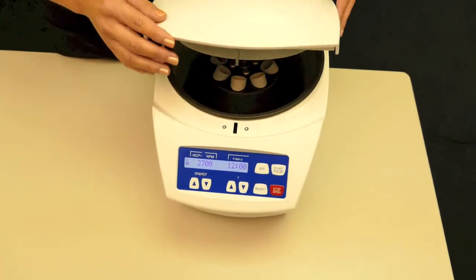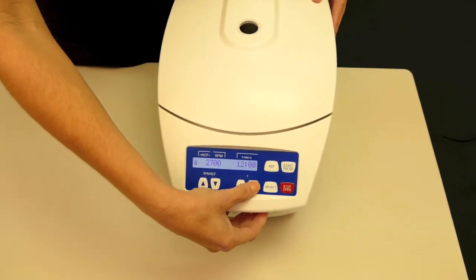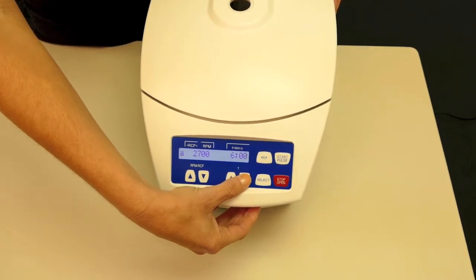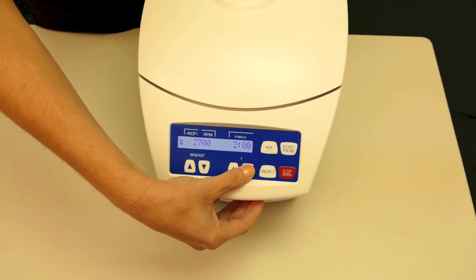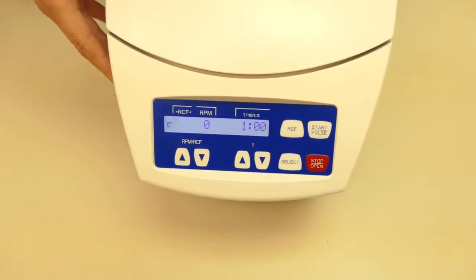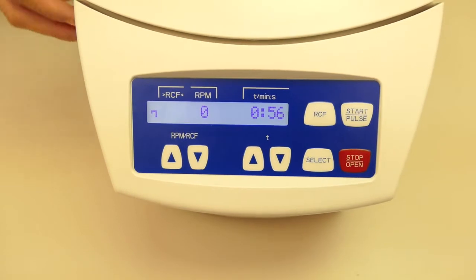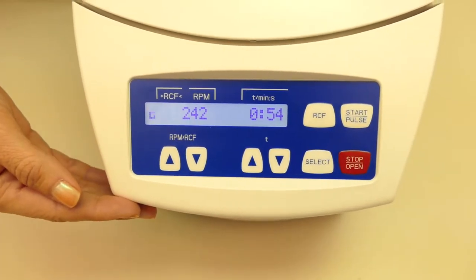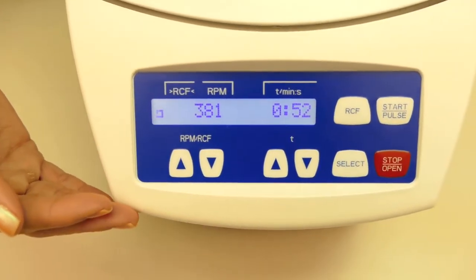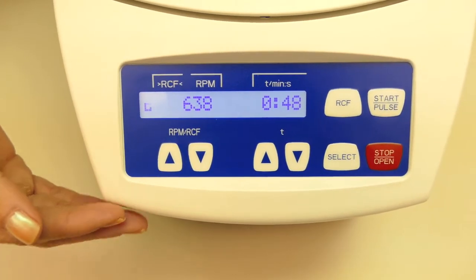Next, we're going to do a test run on the machine. We will close the lid and take your time down to one minute. Press start. This is just to see that everything is running properly. You'll note that the time and RPMs will increase and decrease on the panel.